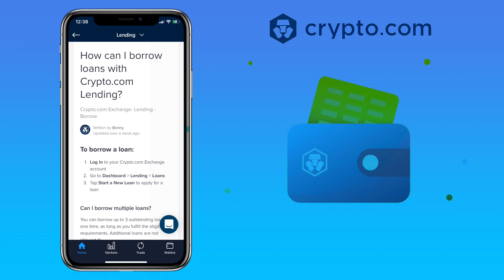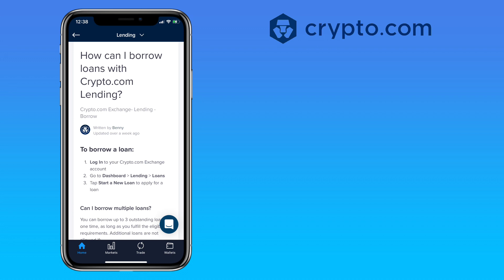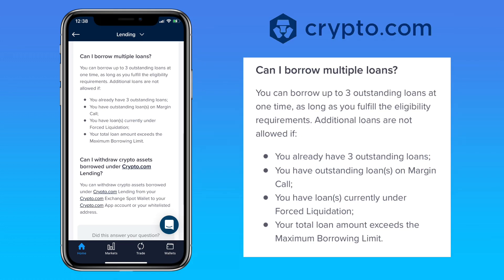Here are the steps to borrow loans with crypto.com lending: log into your crypto.com exchange account, go to Dashboard, then Lending, tap Loans, and click Start a New Loan. You can borrow up to three outstanding loans at one time, as long as you fulfill the eligibility requirements. Additional loans are not allowed if you already have three outstanding loans, have outstanding loans on margin call, or have loans currently under forced liquidation.